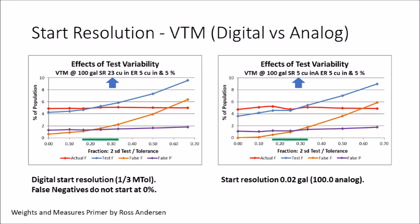With the VTM, there's a slight difference between a digital VTM and an analog VTM. On a digital VTM, the rounding when we stop at 100.0 is plus or minus half a scale division. But with an analog indicator, the inspector tries to stop right at the graduation, so the analog rounding is reduced — I estimate it as a resolution of 5 cubic inches. What stands out is the orange line on the left-hand figure is elevated by about 0.5 to 0.6 percent, consistent across the whole range of the x-axis. The digital start resolution of one-third of the maintenance tolerance increases the false negatives.